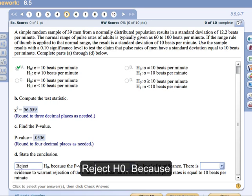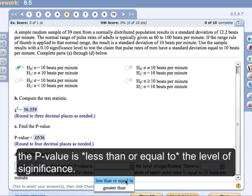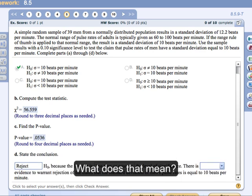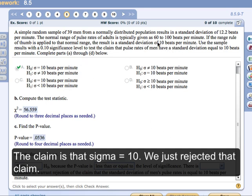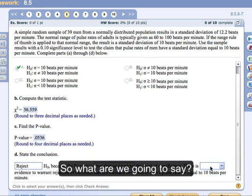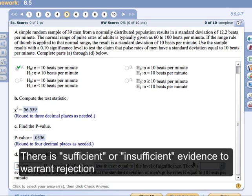Reject H0 because the p-value is less than or equal to the level of significance. And what does that mean? The claim was that it's equal. That was our claim, that sigma equals 10. We just rejected that claim. So what are we going to say? There is sufficient or insufficient evidence to warrant rejection of the claim that it's equal to 10.